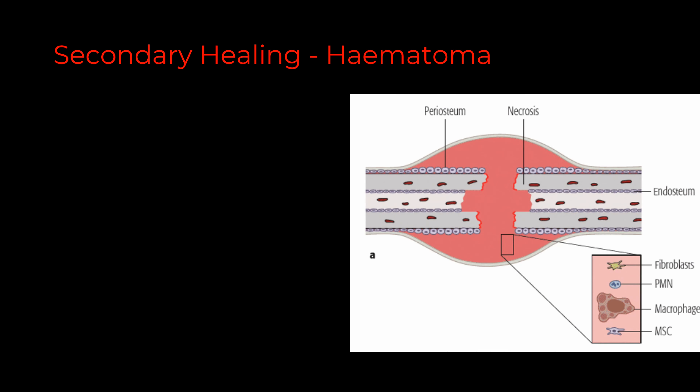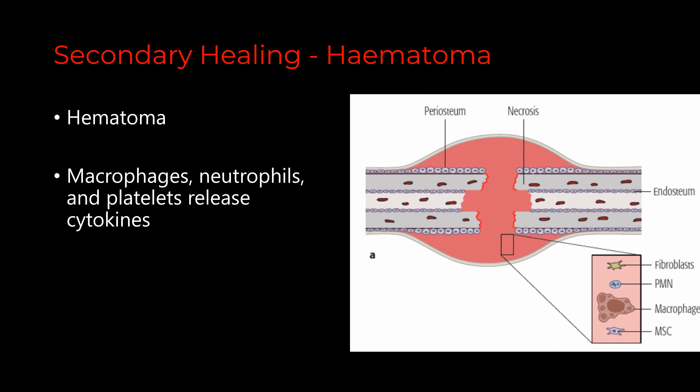Whereas secondary healing, also called endochondral healing, occurs with periosteal bridging. It starts with hematoma formation and active inflammation. The formed hematoma provides hematopoietic cells and secretes a lot of growth factors. The predominant hematopoietic cells are macrophages, neutrophils, and platelets. All these hematopoietic cells secrete a lot of cytokines.